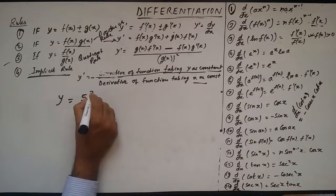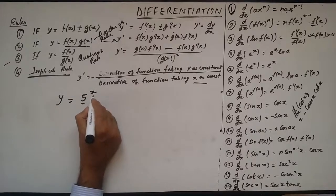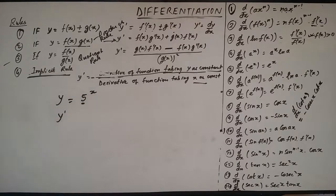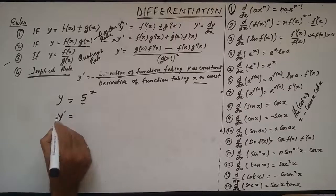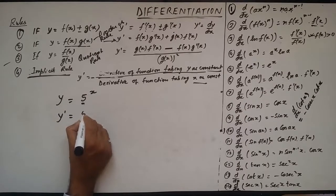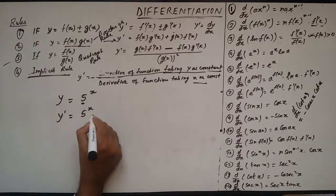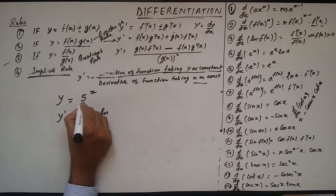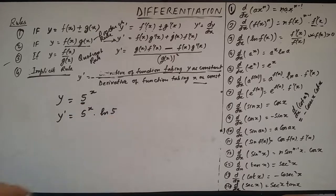Now y is equal to 5 to the power x. This is of the form aˣ, so the derivative of this function is 5ˣ · ln(5), where 5 stands for a and ln(5) stands for ln(a).